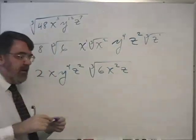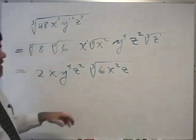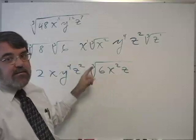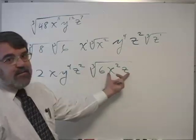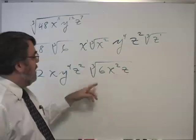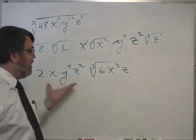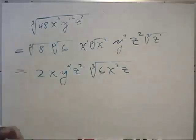As long as you end up with your powers under the radical less than your index, then you're done simplifying that part. I can't simplify the cube root of six, so this is as far as we can take it. The problem is completed.